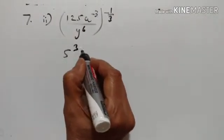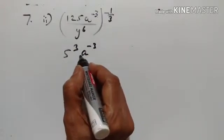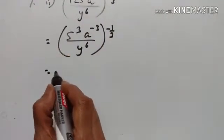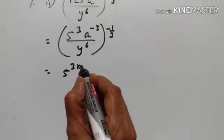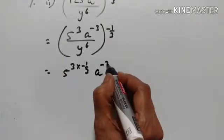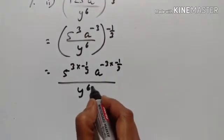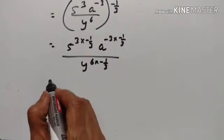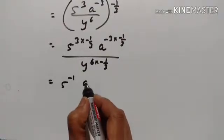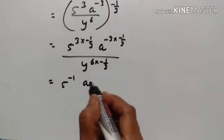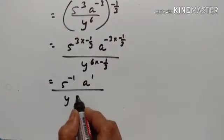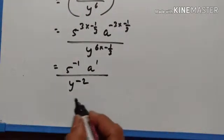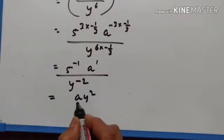a raised to the power of minus 3 upon y raised to the power of 6, minus 1 upon 3. Then 4 minus 3 upon y raised to the power of 3 into minus 1 upon 3. a raised to the power of minus 3 into minus 1 upon 3, y to the power of 6 into minus 1 upon 3. The 3s cancel, giving 5 to the power of minus 1; 8 into minus gives plus. The 3s cancel again giving plus 1 upon 3; this becomes a y squared upon 5.